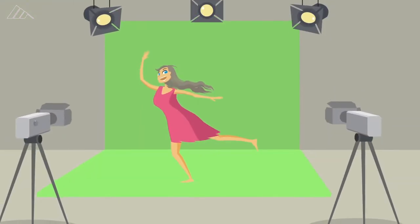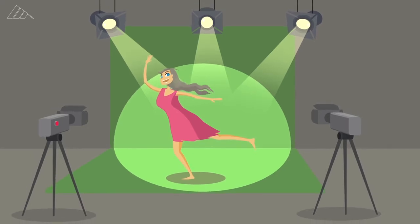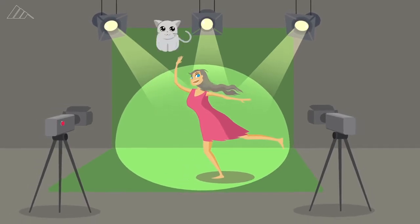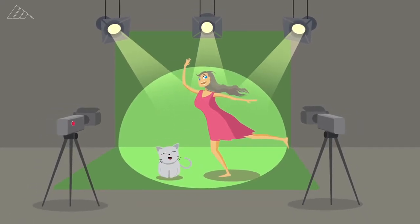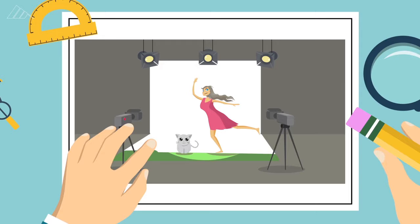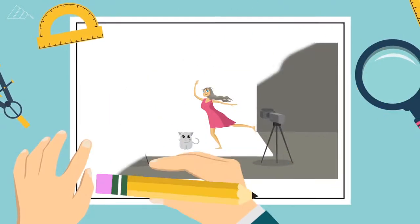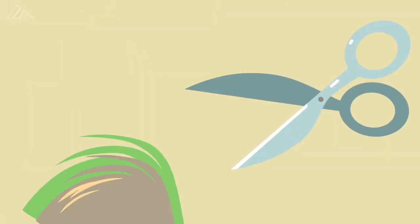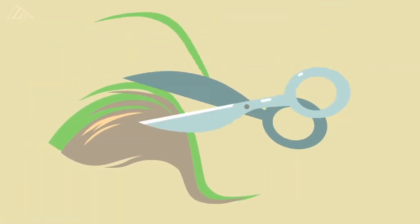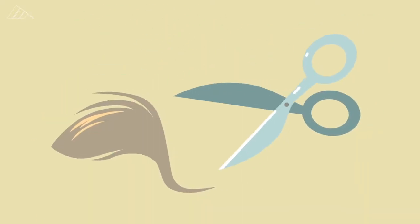With those guidelines in hand, filmmakers can shoot the plate, as it's known, putting an actor or another real-life element in front of a green screen. The plate then goes through keying and rotoscoping, where technicians edit out the content to be removed from the scene down to individual strands of hair.